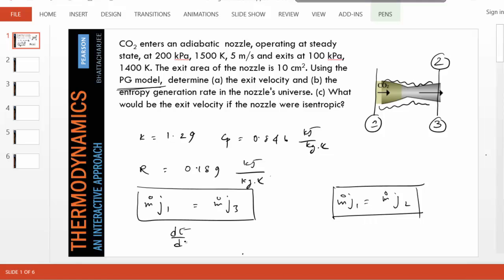Suppose we write the general energy equation. We know it's m dot j1 minus m dot j3 plus q dot minus w dot external. No work, no heat transfer, steady state. And thus, that's how we get our conclusion, both for the isentropic nozzle and actual nozzle.